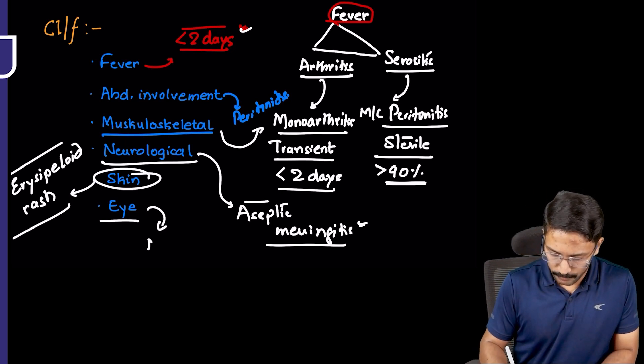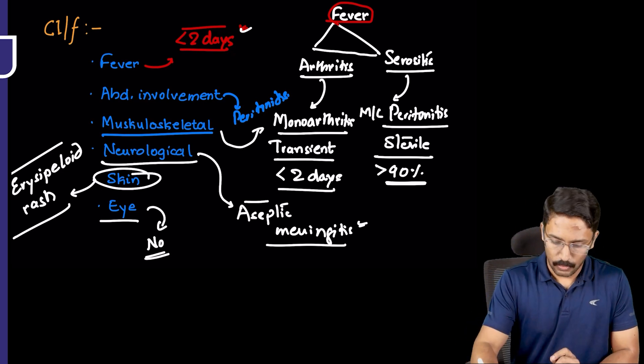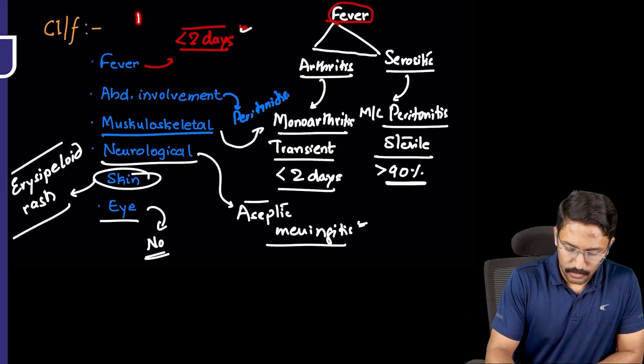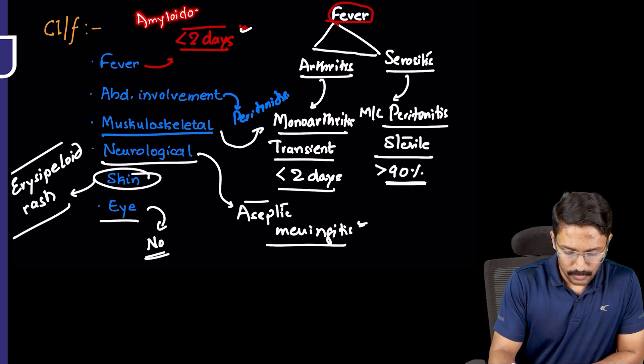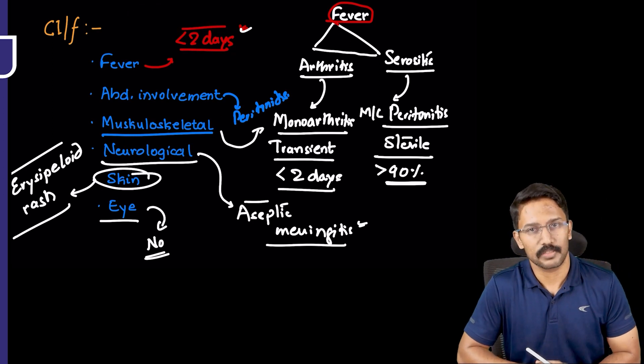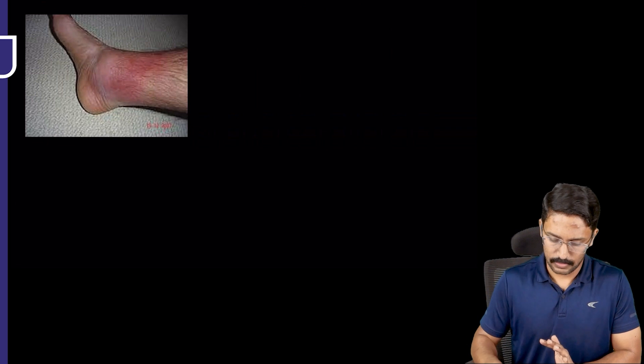Generally, there is no involvement of eye in familial Mediterranean fever. Now, apart from this, if the condition is long-standing, it can lead to development of amyloidosis. So sometimes examiner might ask, which auto-inflammatory syndrome is associated with increased risk of amyloidosis? Again, familial Mediterranean fever.